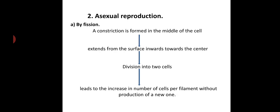Asexual reproduction is carried out by means of fission. A constriction is formed in the middle of the vegetative cell, and that extends toward the center from the surface inwards toward the center. As a result, a constriction appears in the vegetative cell, which divides the cell into two. This division into two cells leads to the increase in number of cells in the filaments without the production of new ones.